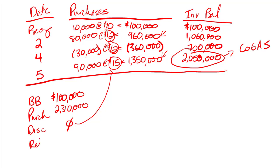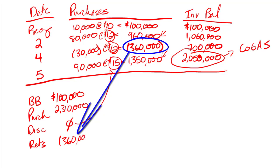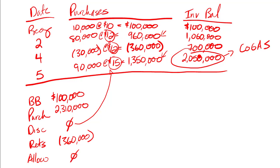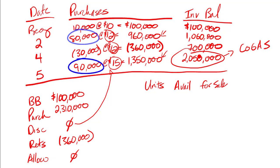We did have returns: $360,000, and no allowances. An allowance is where they reduce the price because an item was broken and rather than returning the merchandise they say just pay a little less and keep it. The other thing we need to know is the units available for sale. Adding up: 10,000 + 80,000 + 90,000 minus the 30,000 returned gives us 150,000 units available for sale.